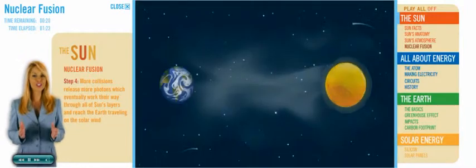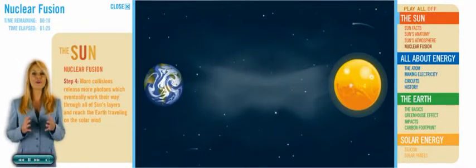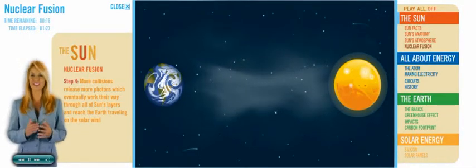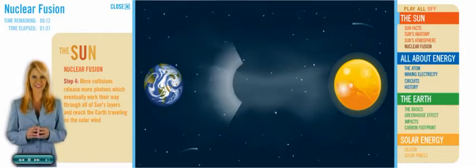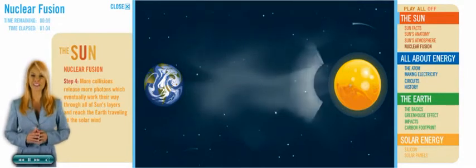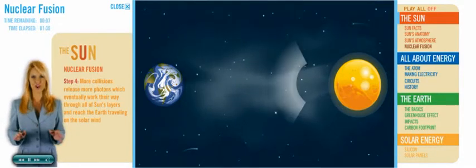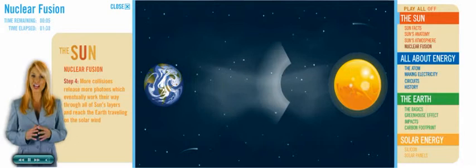Step four, more collisions release more photons, which eventually work their way through all the Sun's layers, and reach the Earth traveling on the solar wind. This energy can be harnessed and used to make electricity. No need to burn fossil fuels like coal, oil, or natural gas.